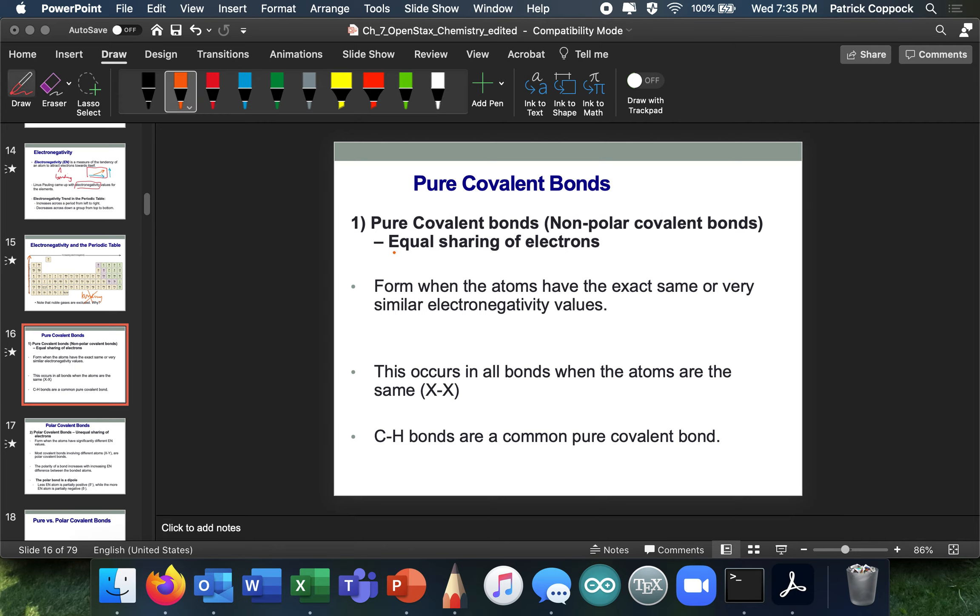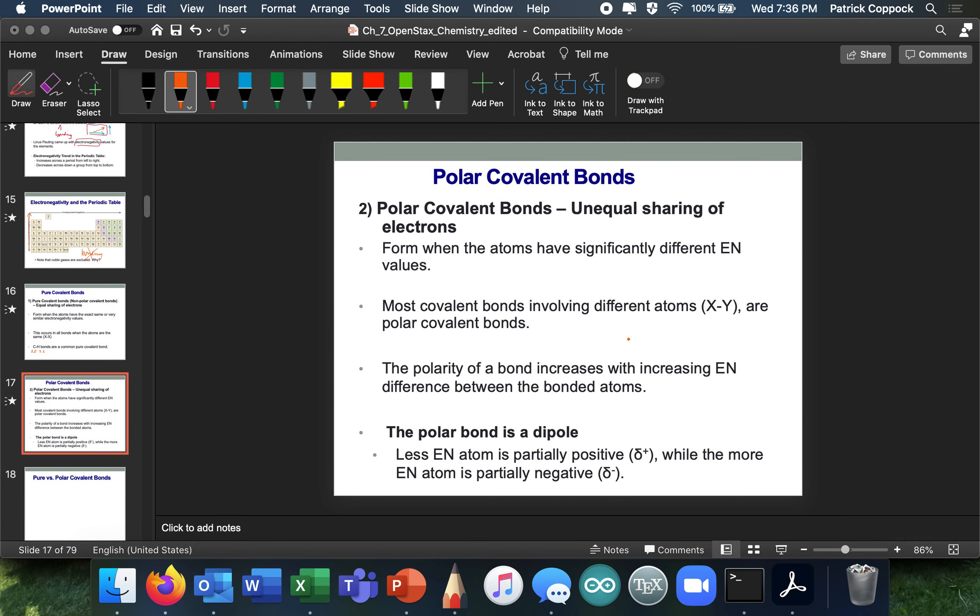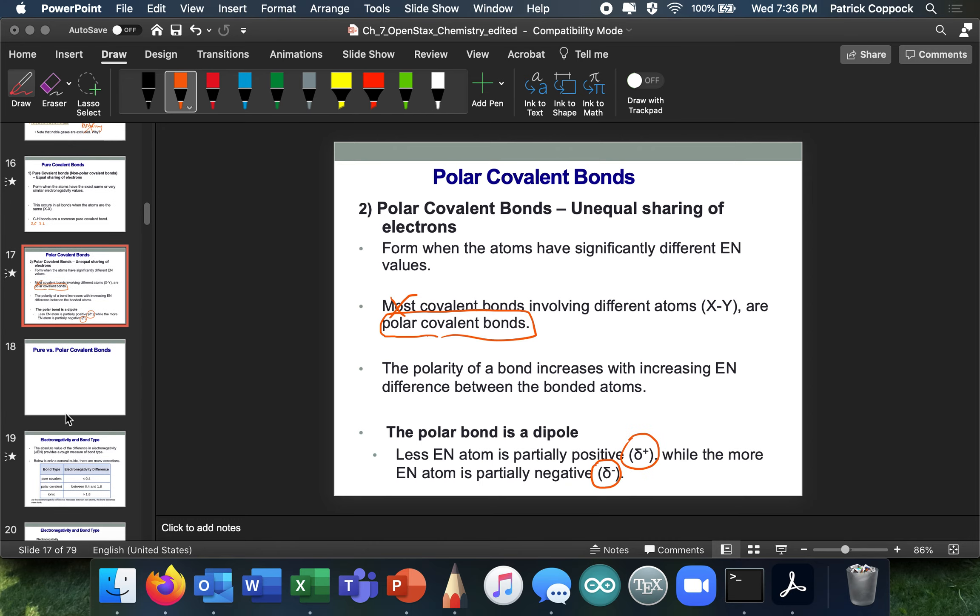So, pure covalent bonds form when atoms have the exact same or very similar electronegativities. This occurs in all bonds where the atoms are the same. CH is considered a pure covalent bond, even though they're not exactly the same. The electronegativities are pretty close. On most scales, it's 2.5 and 2.2. Those electronegativities are pretty close, and so that's considered a pure covalent bond. Polar covalent bonds come when there's unequal sharing of the electrons, and of course, when they have significantly different electronegativity values.